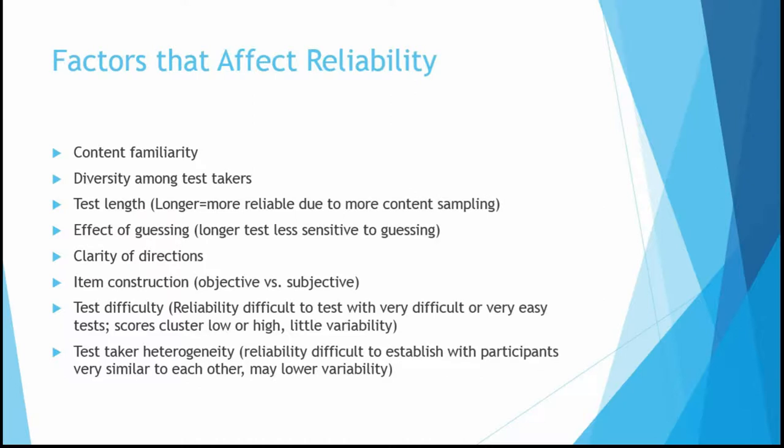Let's look at some factors that affect reliability. One is content familiarity — if you're familiar with the content of a test, it will be a more reliable measure of what you know. This becomes a reliability issue when the content you're familiar with may not be related to what the test is measuring. The book gives an example of an author who took a test with analogies written using fencing and ballet terminology — if you're not familiar with those topics, that test may not be a reliable measure of your ability to complete analogies.